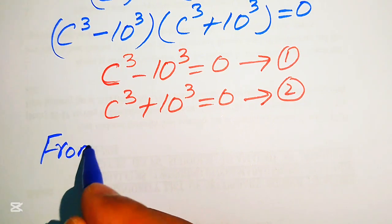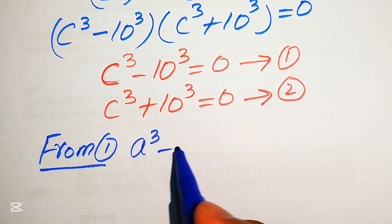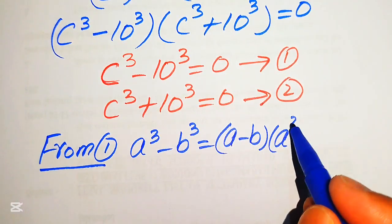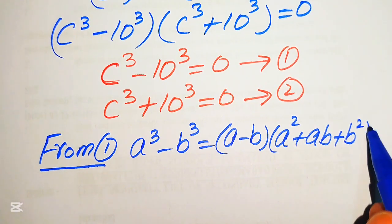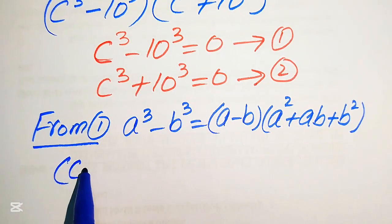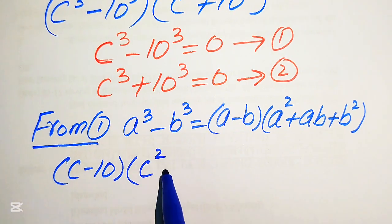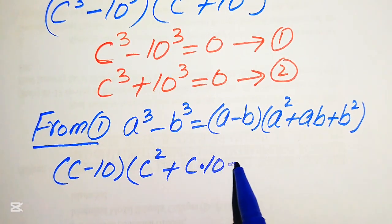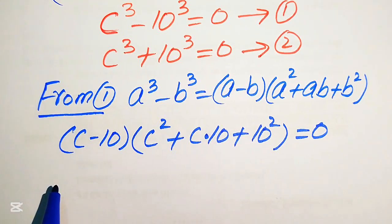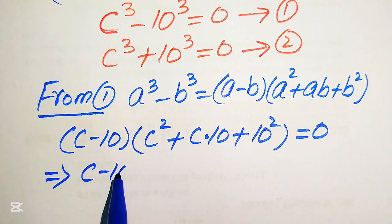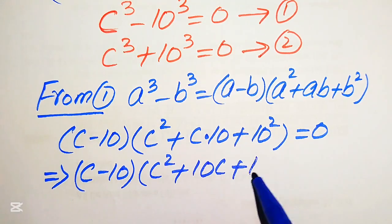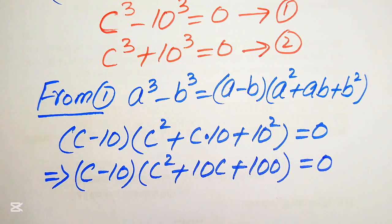First we focus on equation number 1. We apply the cubic difference formula: a cubed minus b cubed equals a minus b times a squared plus ab plus b squared. According to this formula, equation number 1 becomes C minus 10 times C squared plus C times 10 plus 10 squared equals 0. After simplification, this is C minus 10 times C squared plus 10C plus 100 equals 0.